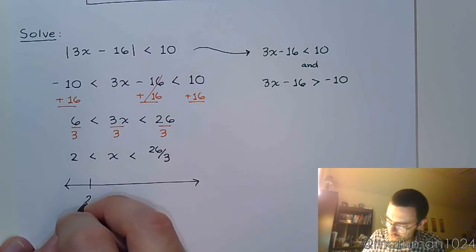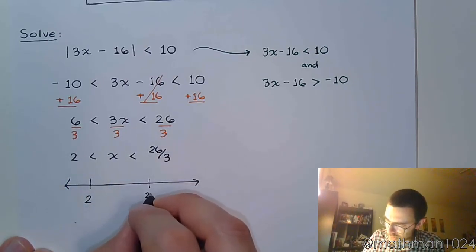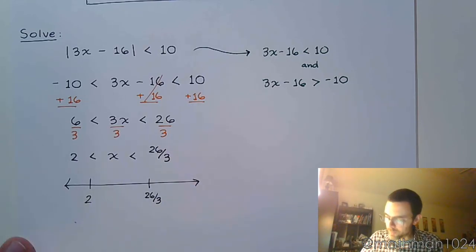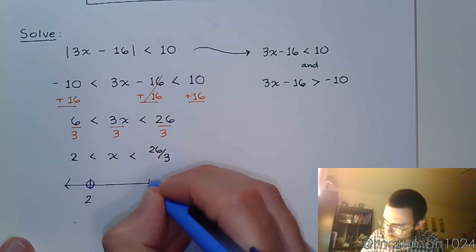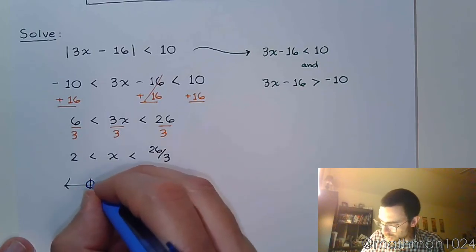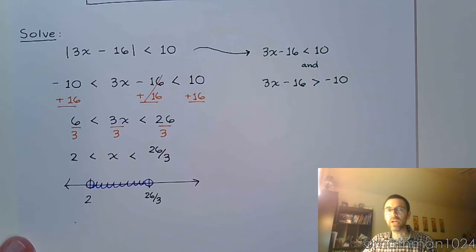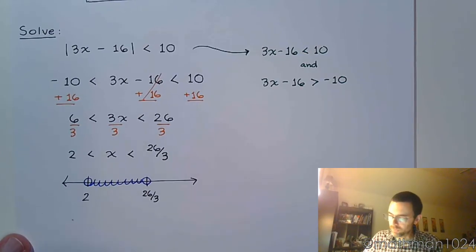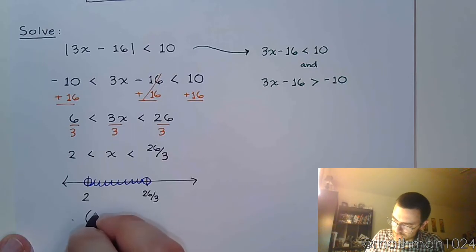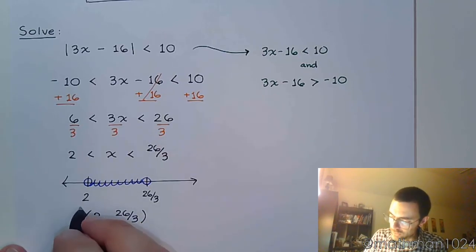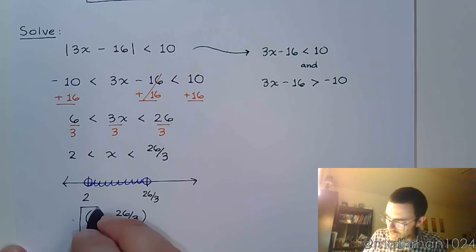You're going from 2 on the left to 26 thirds on the right side. x represents your solutions for those values that are in between. By having less than but not equal to, these points will remain open, and the interval notation is parentheses 2 to 26 thirds parentheses because these endpoints are not included.